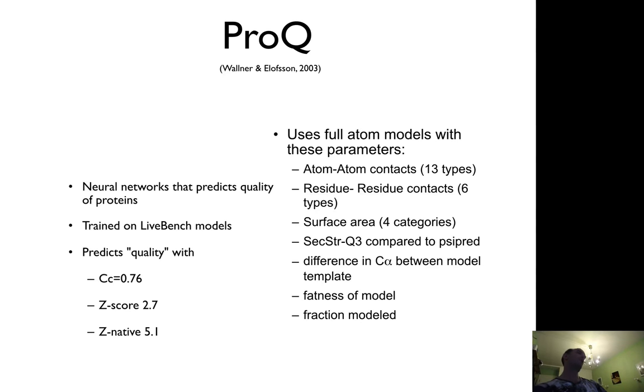So how do you know if a model is correct? One way to do this is to use what's called the Model Quality Assessment Program, and this here describes our attempt to do that some time ago, ProQ. So the idea with ProQ was quite different from early methods because it was trained to predict the quality of a model, and not only if it was correct or wrong, or to identify the native structure from a set of decoys.